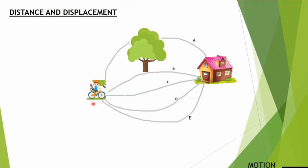You can see that there is a boy who wants to travel to his house. This is known as the initial position where the boy is standing, and the final position is the house where he wants to go. You can see that there are different paths through which he can travel and reach his final destination, the shortest path here being path C.